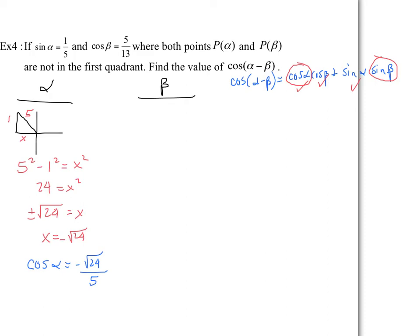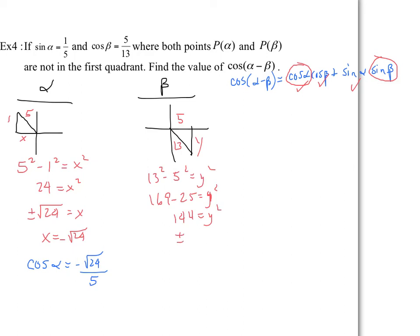For beta: cos β is positive but beta is not in the first quadrant, so we're in the fourth quadrant. Using cos β = 5/13 — adjacent over hypotenuse — we apply Pythagorean theorem: 13² minus 5² = y², so 169 minus 25 = 144. So y = ±12. Since we're in the fourth quadrant, y is negative, so sin β = −12/13.